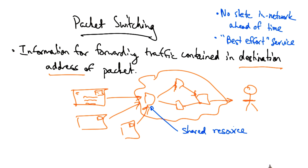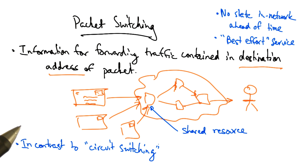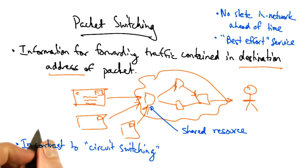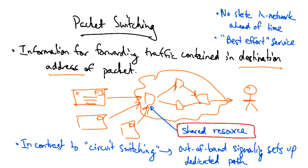This is in contrast to the phone network, where if you were to make a phone call, the resources for the path between you and the recipient are dedicated and are allocated until the phone call ends. The mode of switching that the conventional phone network uses is called circuit switching, where a signaling protocol sets up the entire path out of band.